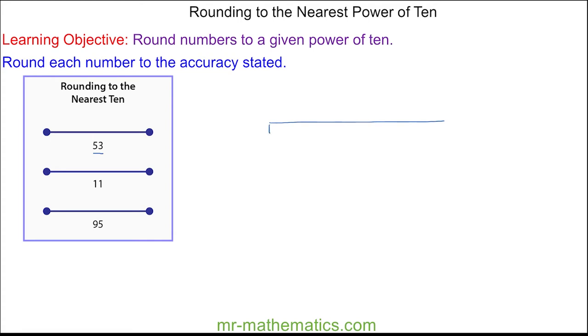And you can see 53 is between 50 and 60. And because 53 is approximately here, which is 3 away from 50 and 7 away from 60, we round it to 50.